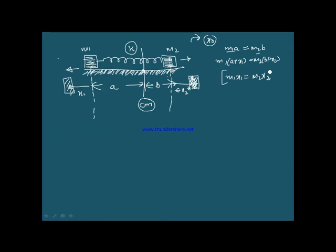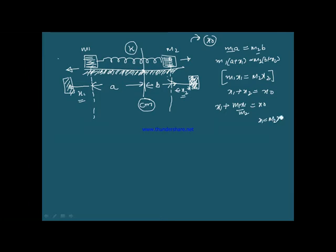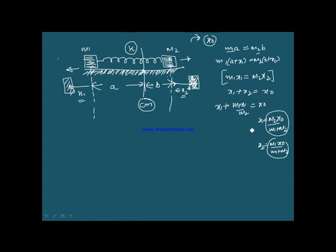In such problems where some extension is given, this extension will be shared in the ratio M1x1 = M2x2. The total extension is x1 + x2 = x0. Substituting x2 = M1·x1/M2, we get x1 = M2·x0/(M1 + M2). Similarly, x2 = M1·x0/(M1 + M2). So x1 is the maximum displacement of mass 1 and x2 is the maximum displacement of mass 2. These are the amplitudes of mass 1 and mass 2 respectively, since amplitude is nothing but the maximum displacement from the mean position.